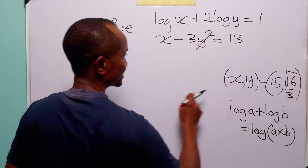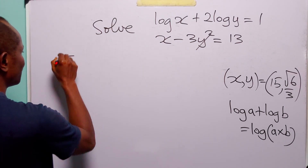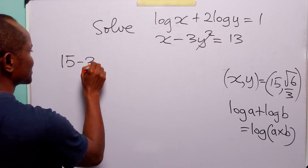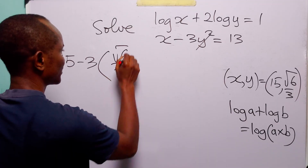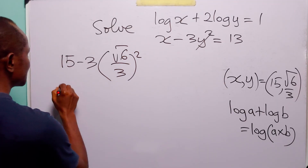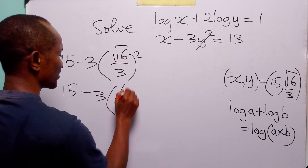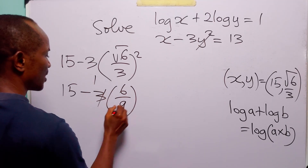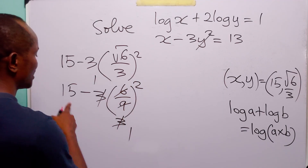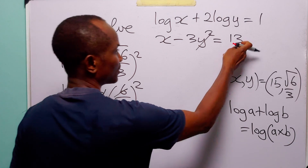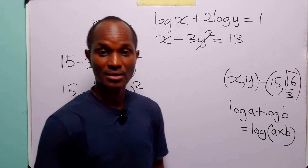Substituting these values of x and y into the left-hand side of the second equation, we have 15 minus 3 times (root 6 over 3) squared. This is 15 minus 3 times 6 over 9, which simplifies to 15 minus 2, equal to 13. So the answers we calculated are correct.